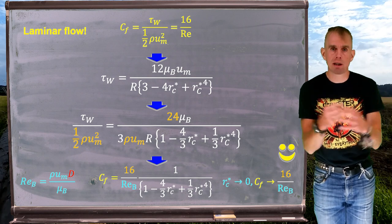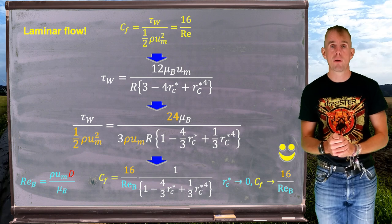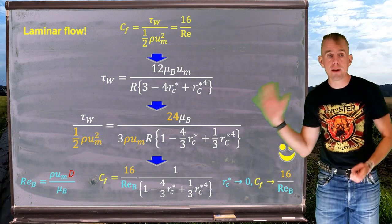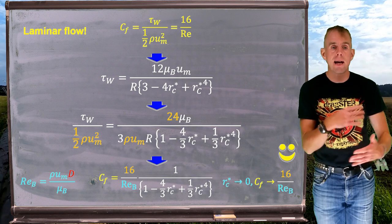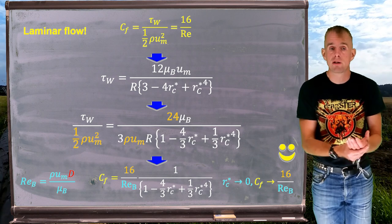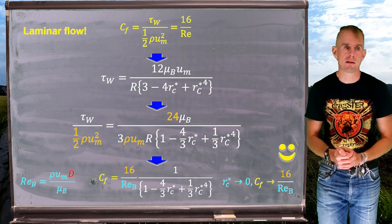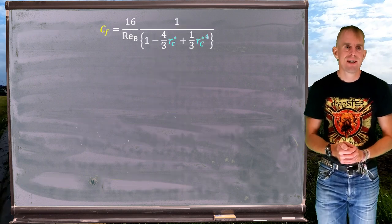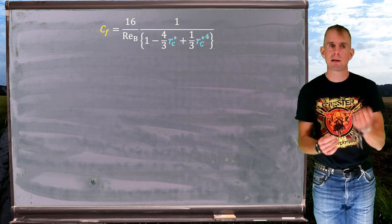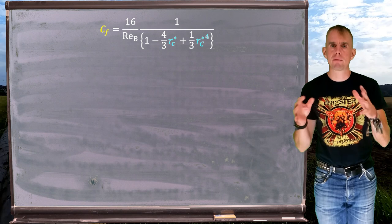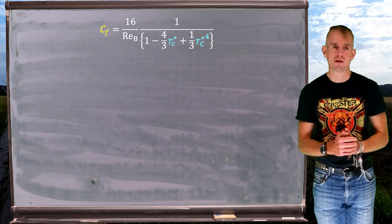As core radius shrinks to zero we get c_f equal to 16 over Bingham Reynolds number, and R_C* shrinking to zero gave us the Newtonian result for apparent viscosity on the previous slide. So we have a friction factor expression that behaves in the limit of small R_C* as we would hope, returning the Newtonian result. My friction factor c_f is 16 over Bingham Reynolds number multiplied by a group of terms that will involve the yield stress.